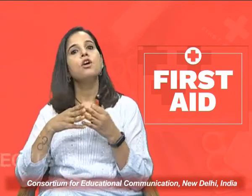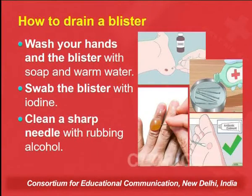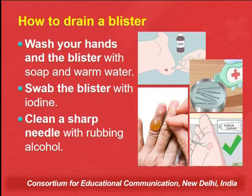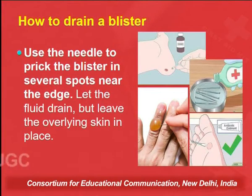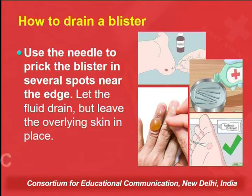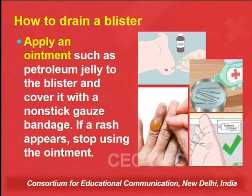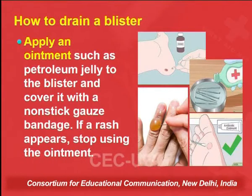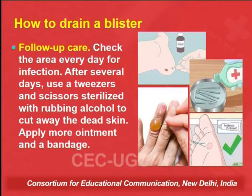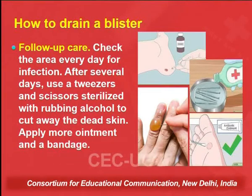How to drain a blister: wash your hands and the blister with soap and warm water. Then swab the blister with iodine. Then clean a sharp needle with rubbing alcohol. Use the needle to prick the blister in several spots near the edge. Let the fluid drain but leave the overlying skin in place. Then apply an ointment such as petroleum jelly to the blister and cover it with a non-stick gauze bandage. If a rash appears, stop using the ointment. For follow-up care, check the area every day for infection. After several days, use tweezers and scissors sterilized with rubbing alcohol to cut away the dead skin, then apply more ointment and bandage.